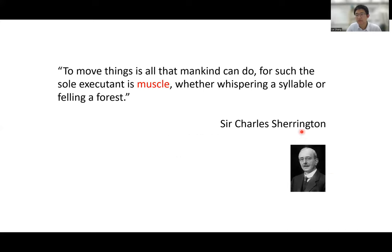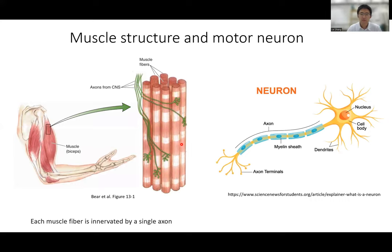Now let's move to the next section about muscles. Sherrington, a very famous neurophysiologist and Nobel Prize winner, said that muscle is the only actuator of movement. All human movements are the result of contracting skeletal muscles, so we need to first understand the basic functionality of muscles. Each muscle consists of many smaller thin tubes called muscle fibers, and each muscle fiber is innervated by axons from the central nervous system.